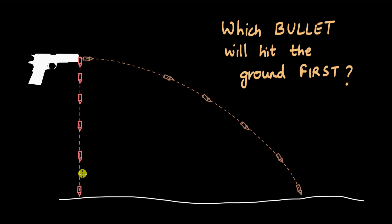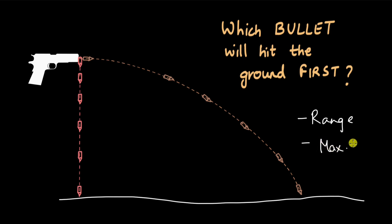Before we answer that, we will jump into analyzing projectile motion and try to understand how to solve any projectile motion problem mathematically. As we do that, we will come across new words such as range. We will also derive a formula for maximum height in projectile motion, and the time it takes for the object to complete its motion.